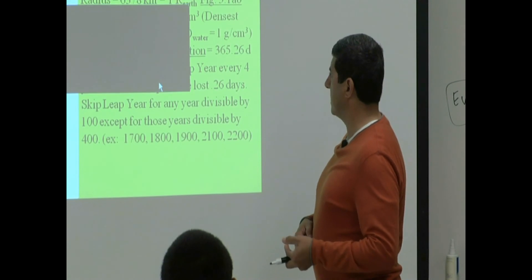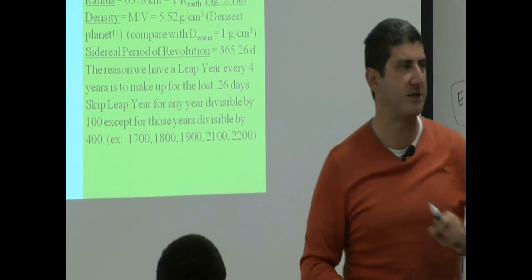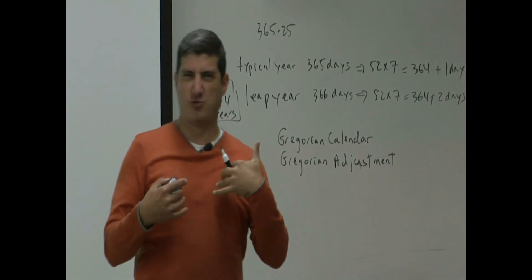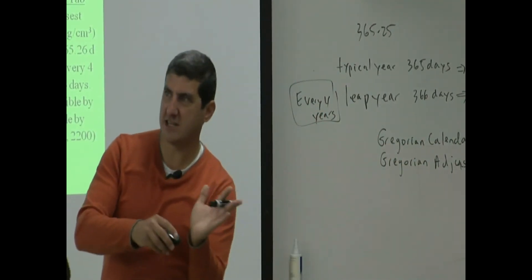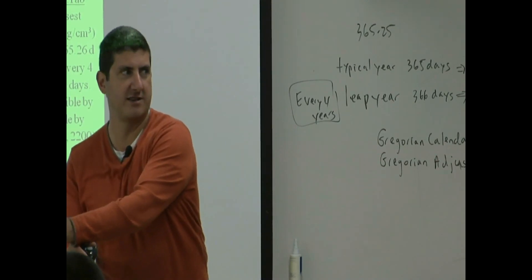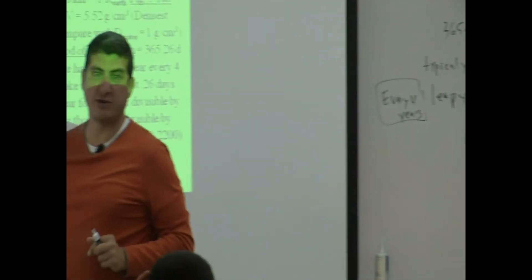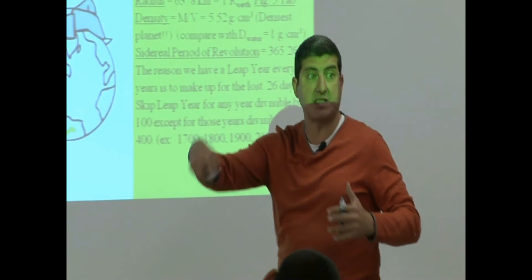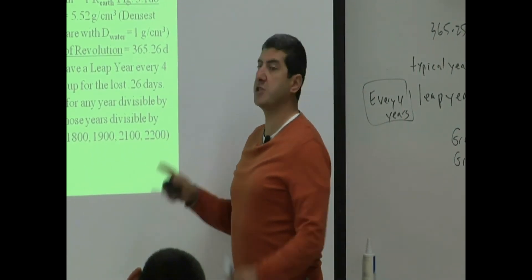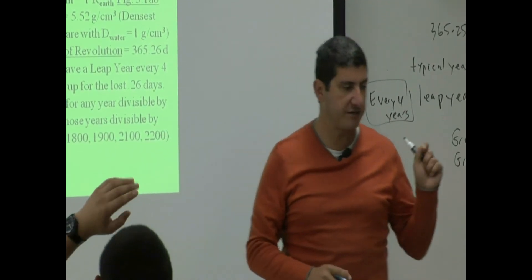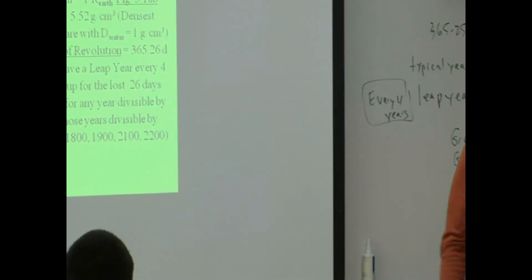So the next times we're going to skip a leap year are 2100, 2200, and so on. Most likely in our lifetime — born in the 1970s, 80s, or 90s and living until 2050 or 2060 — we won't experience a year that should be a leap year but isn't. But whoever is born in 2060 or 2070 will experience this. This is called the Gregorian adjustment, and it's remarkable that they figured out how to fix this issue without computers.